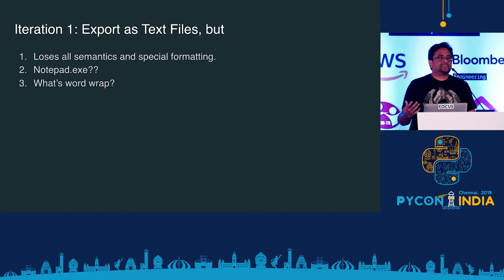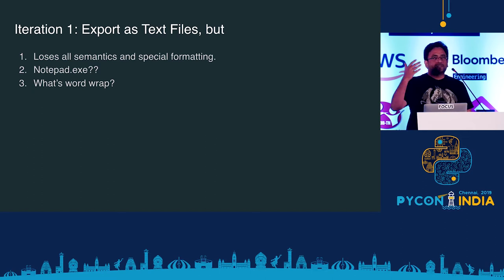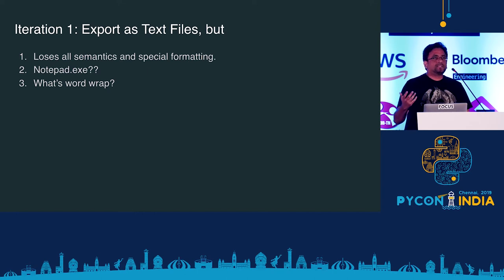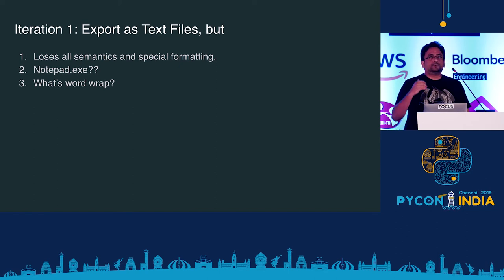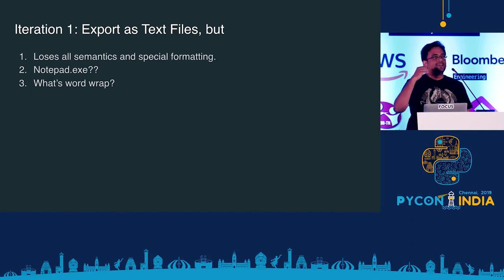The first iteration is basically creating a simple script which outputs a text file. But a normal text file loses all the semantics you get out of the tool — the headline, the sub-headline, and a lot of other tables and those kinds of things are lost. And you end up having to ask the user to open it in Notepad and teach them how word wrap works and why there are multiple lines.